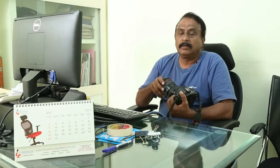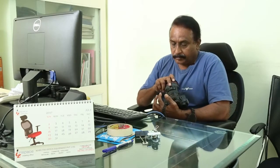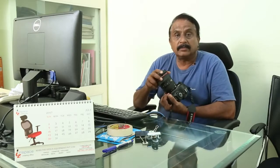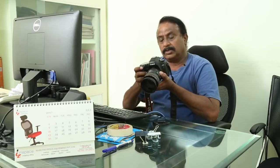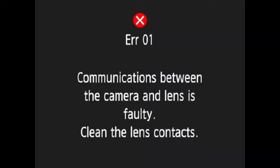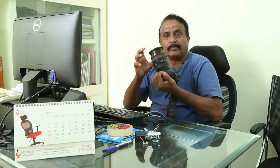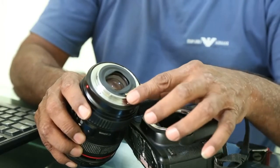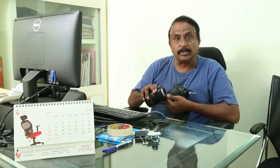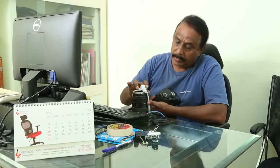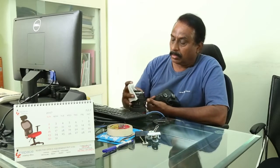I was using it with the 24-105 lens, and I was surprised to get a message saying Error 01 — communications between the camera and the lens is faulty, clean the lens contacts. So I had to clean the lens contacts. We usually clean all lenses very often, so I took a cloth to clean the contacts.